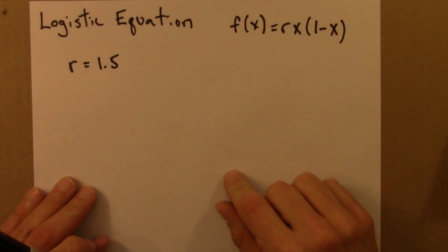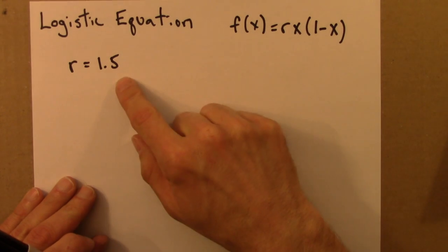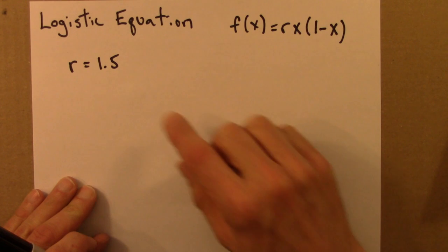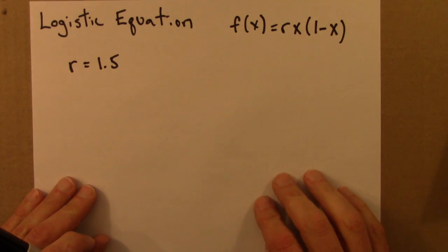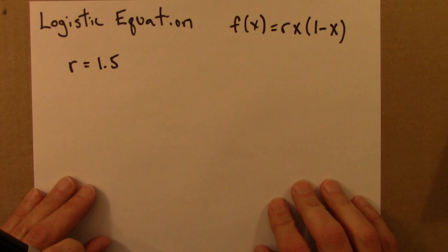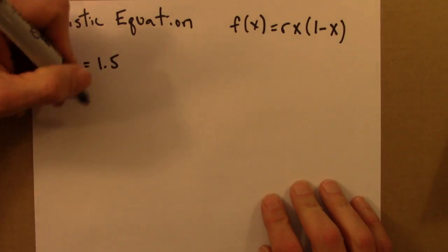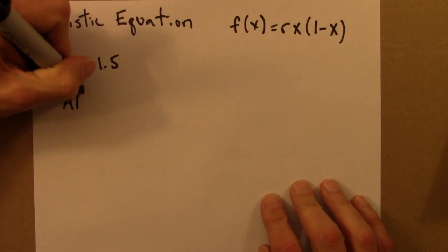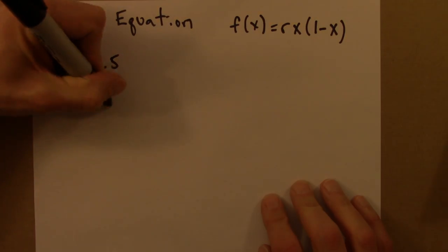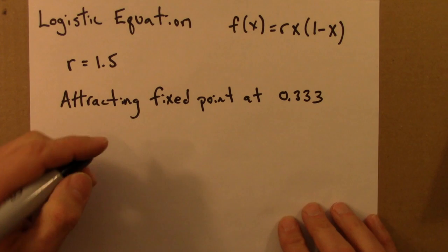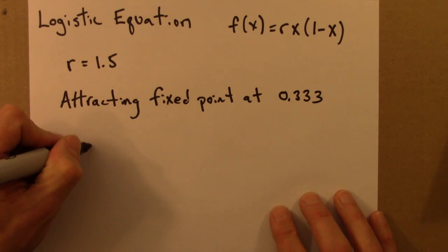We've just been investigating the logistic equation with r equals 1.5. And let's summarize this behavior. We saw an attracting fixed point, stable fixed point, at 0.33. So there's an attracting fixed point at 0.33.